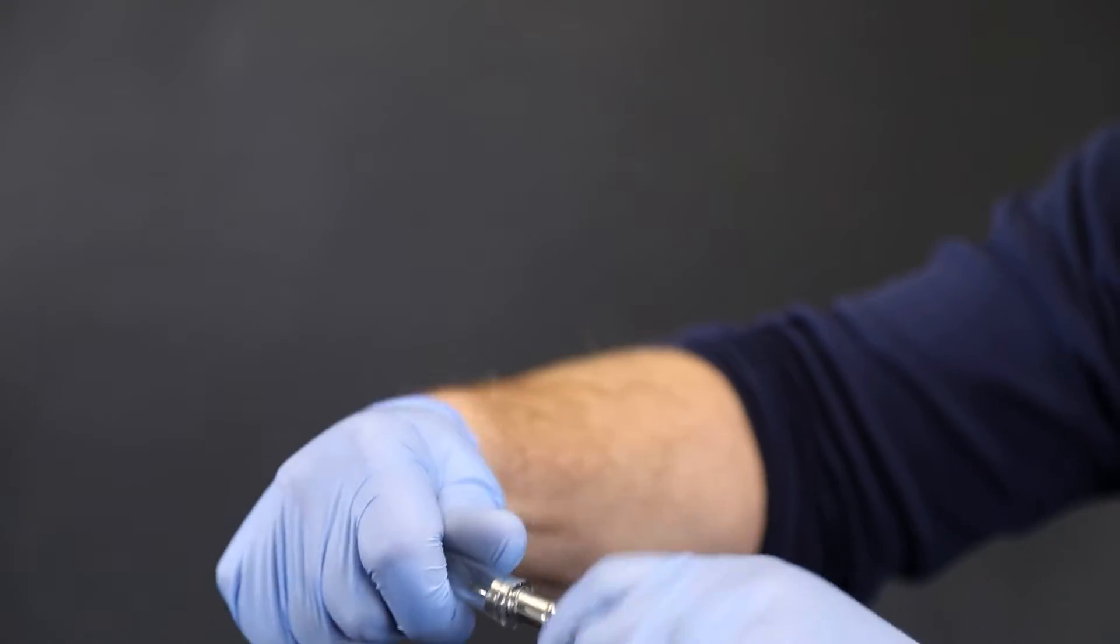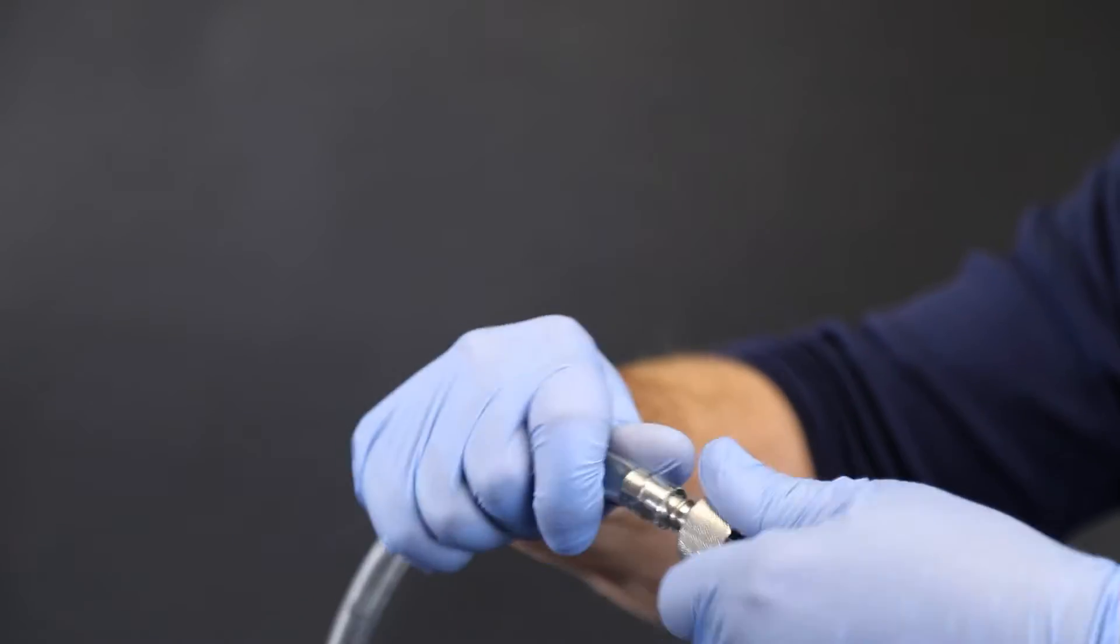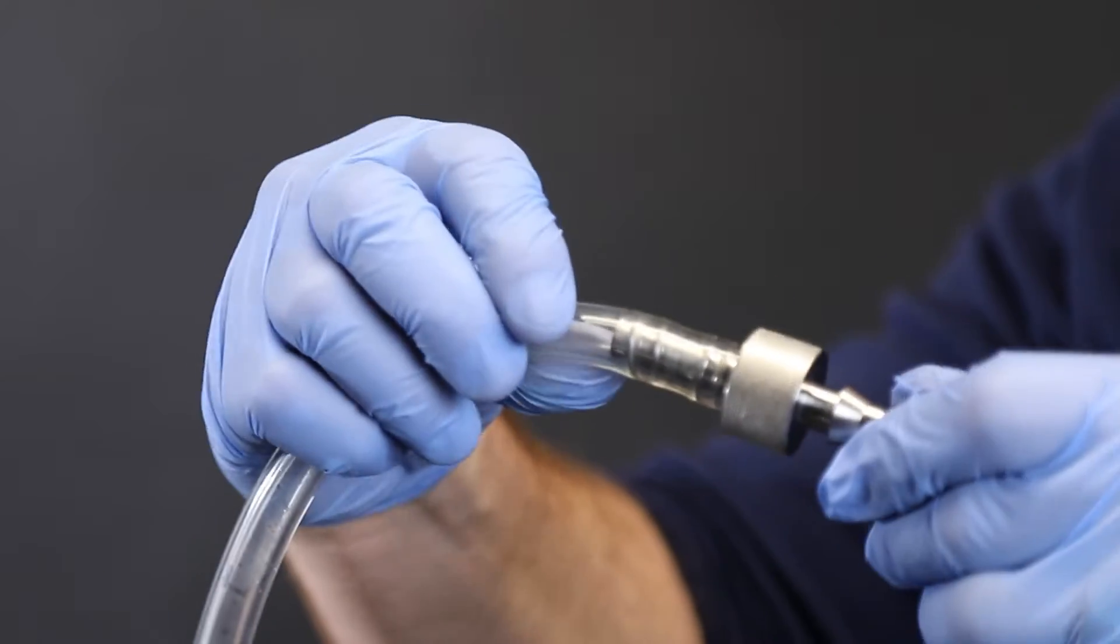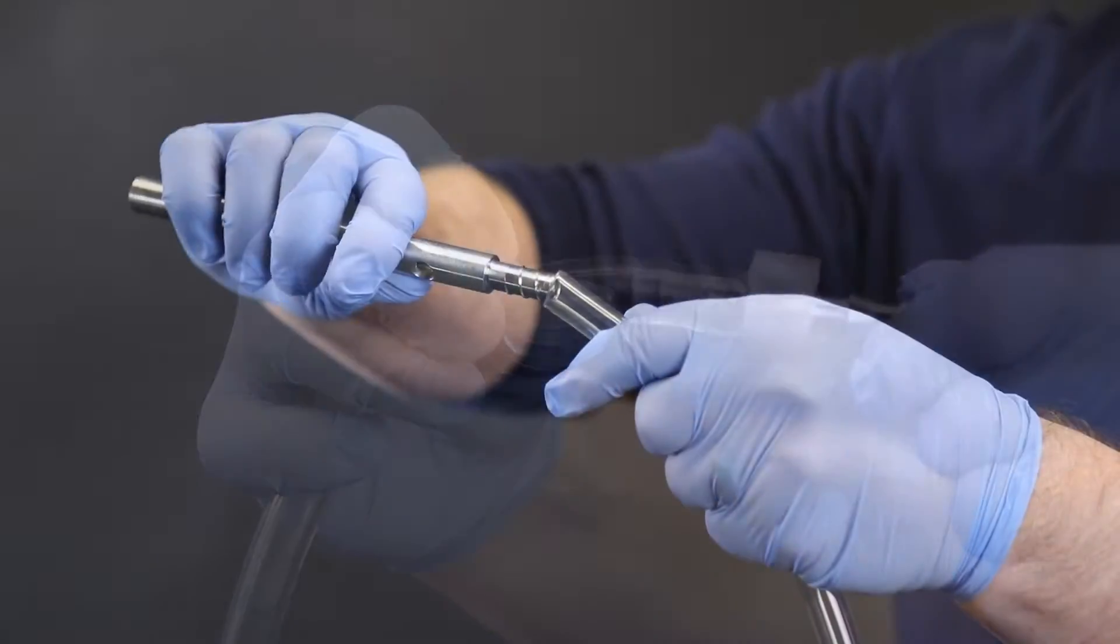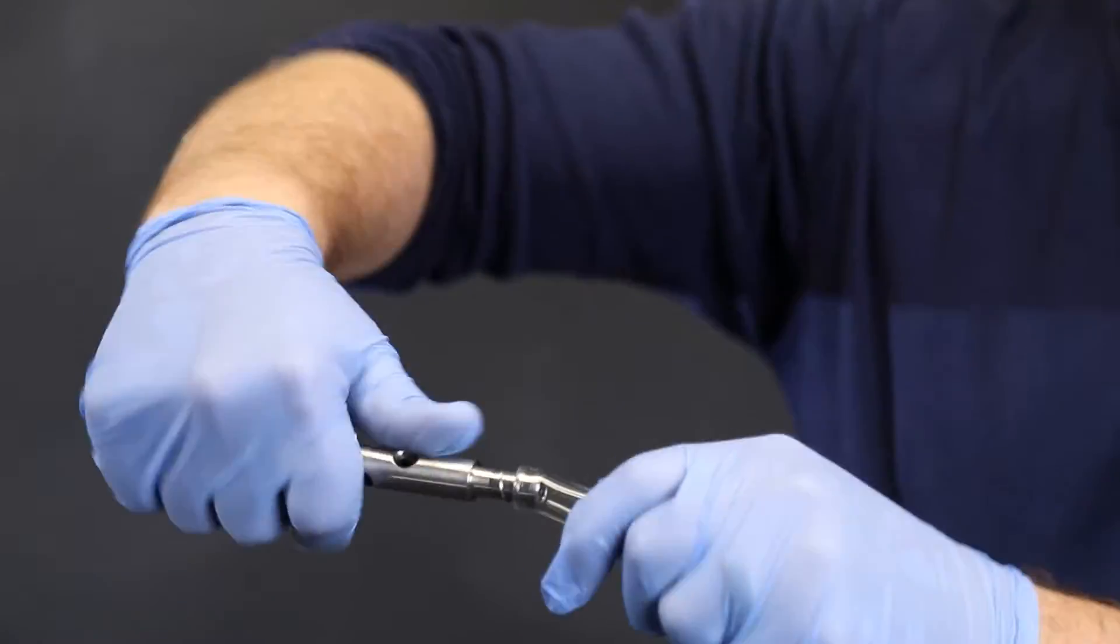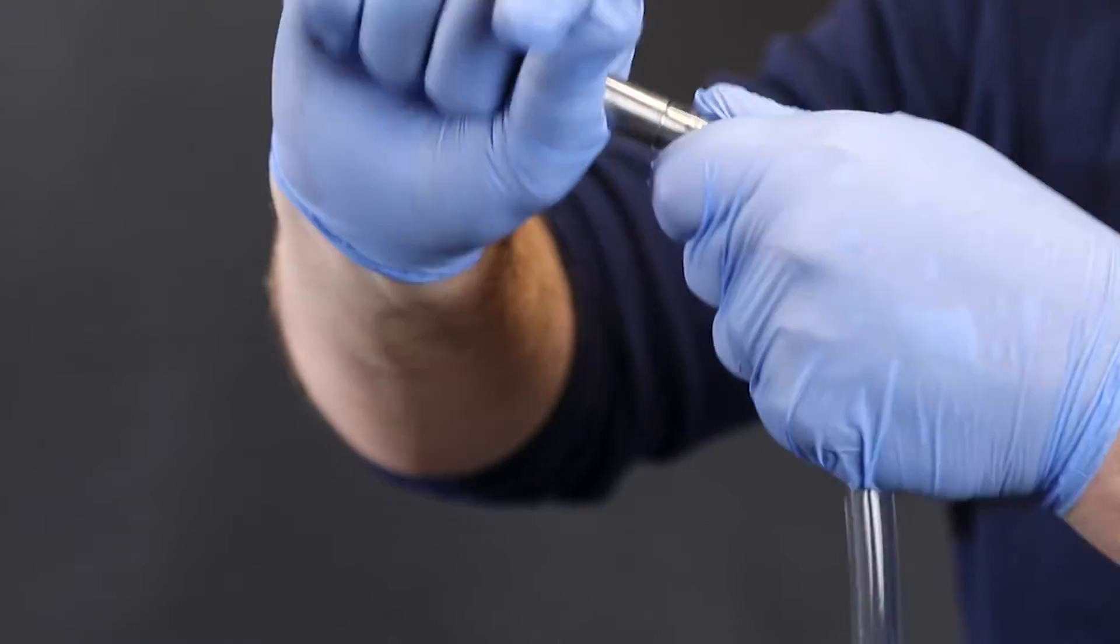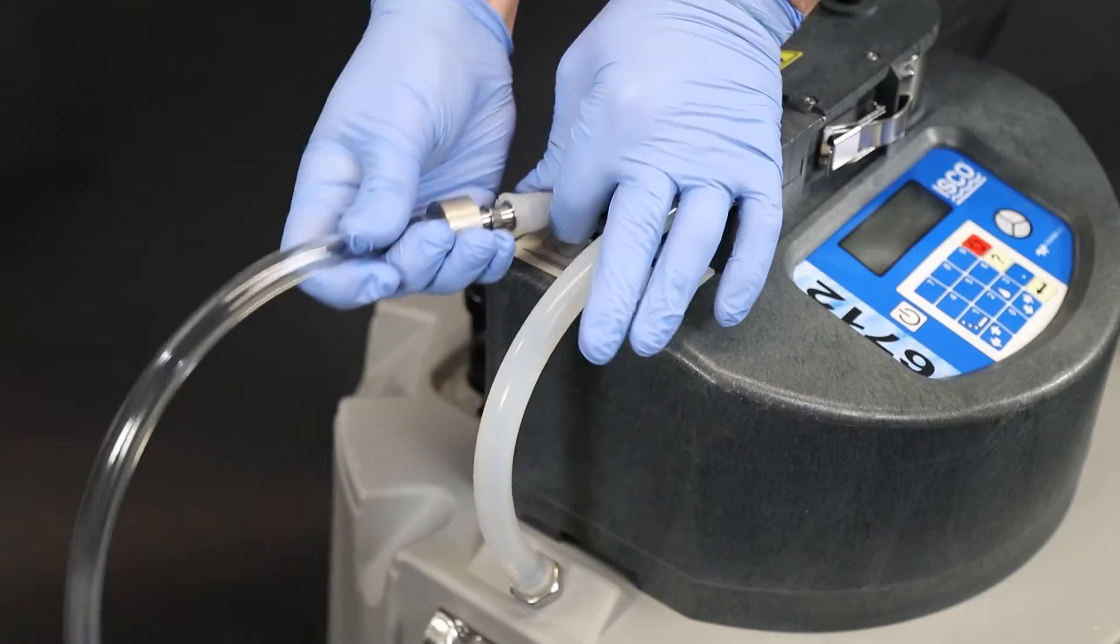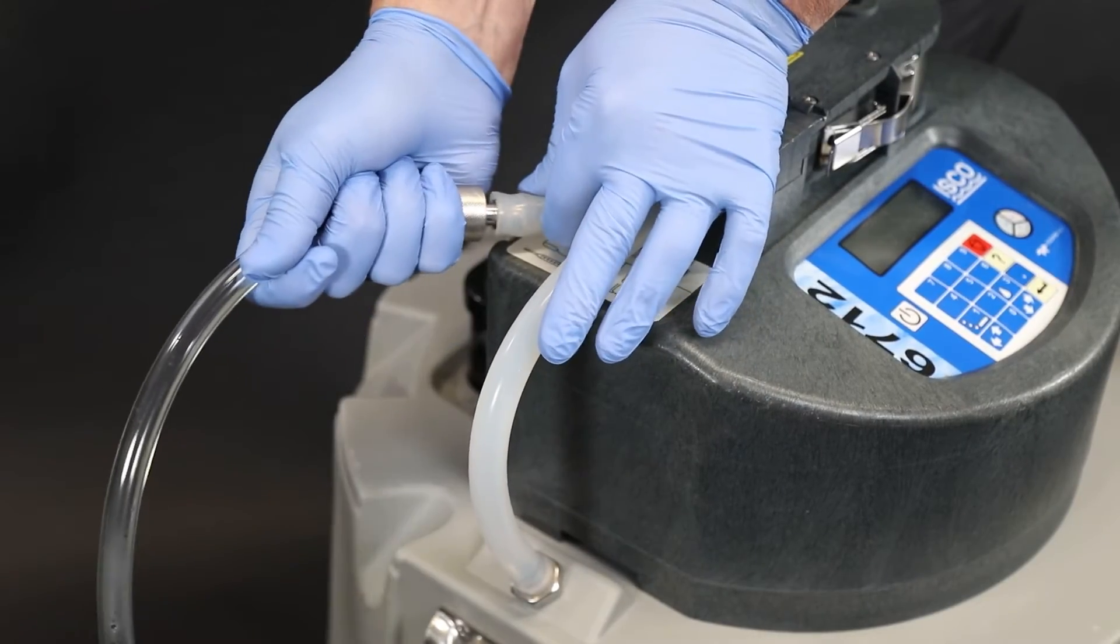To prepare the suction line, first screw a 3 1/8 inch tube coupling into the suction line tubing. On the other end of the tubing, screw in the low flow strainer.